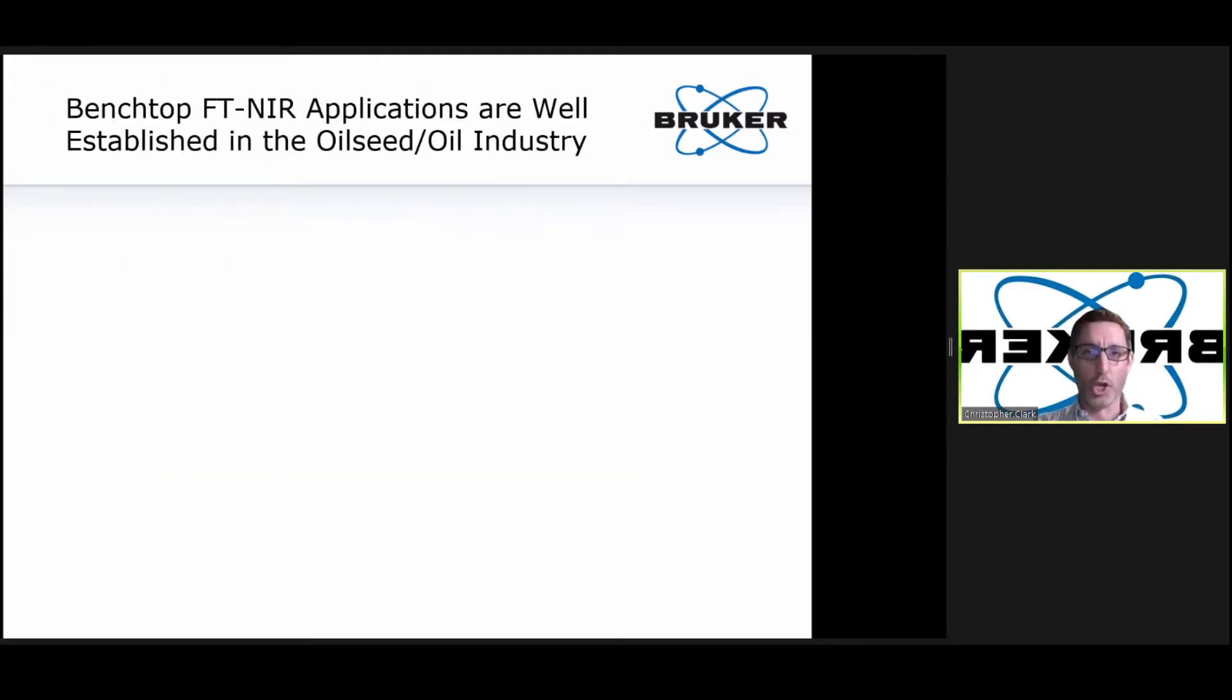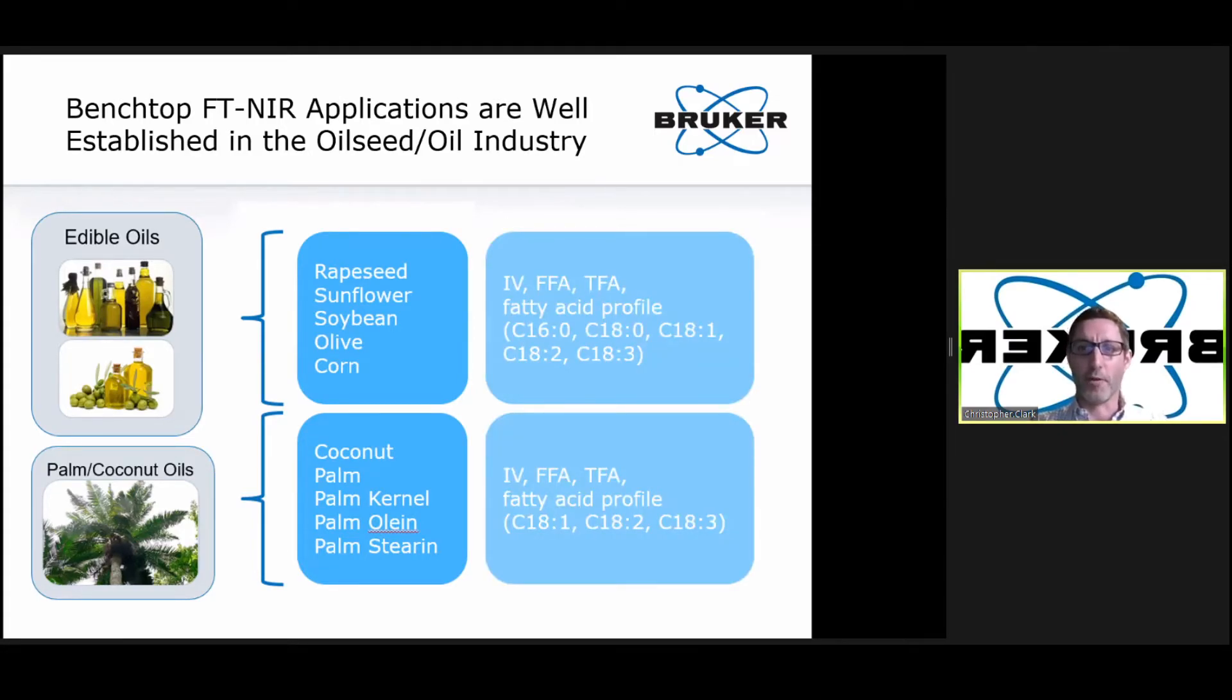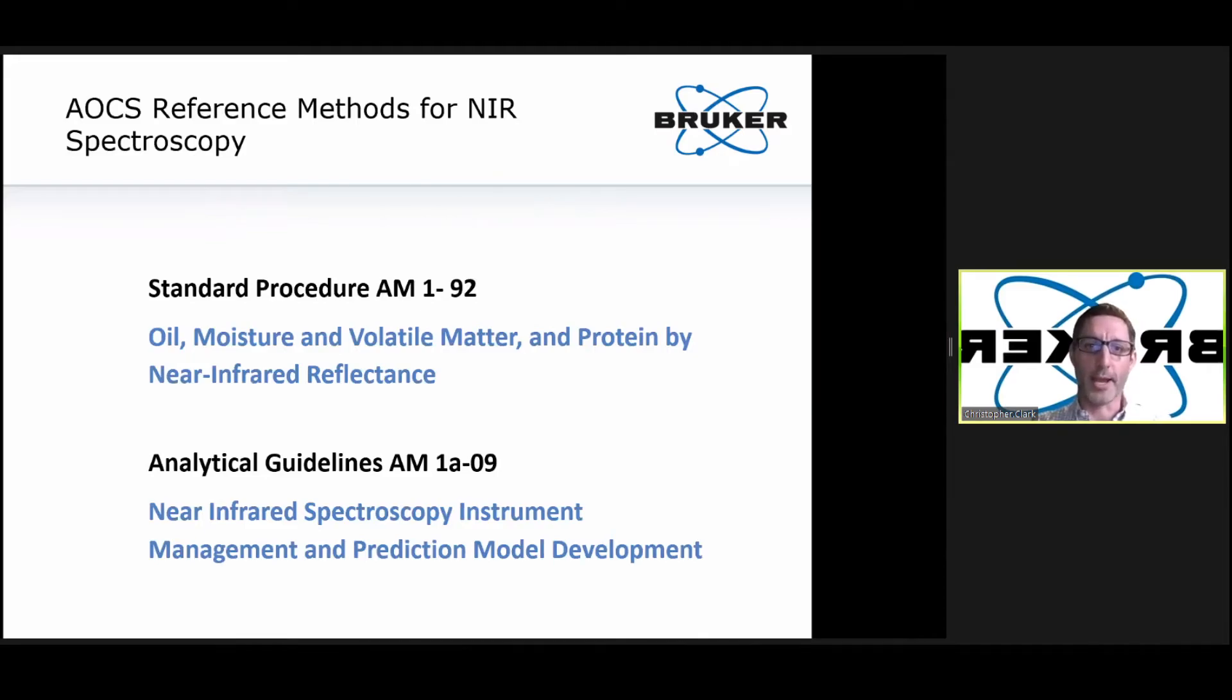Now, NIR is not a new technology in the oil industry. It is a well-developed, well-proven technology that is used for a variety of oil seed and oil types to quantify a variety of different constituents: iodine value, free fatty acids, trans fatty acids, fatty acid profiles, difference in oil seeds, different values, moisture, protein, fiber, ash, fat. And Bruker actually has a fairly extensive catalog of a lot of these calibrations that are already developed. In addition, the AOCS recognizes NIR as a standard procedure for reflectance measurements for oil, moisture, and volatile matter and protein. And they have analytical guidelines for the management and development of models.